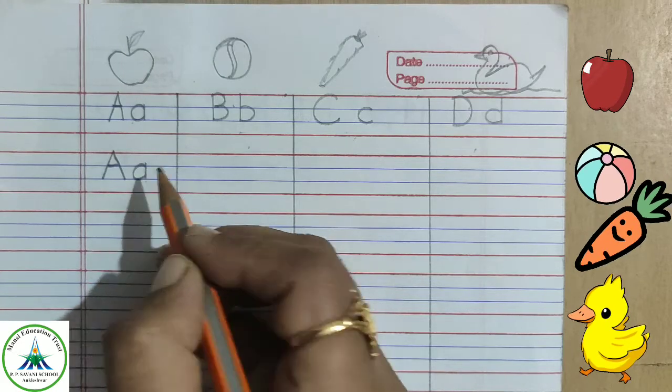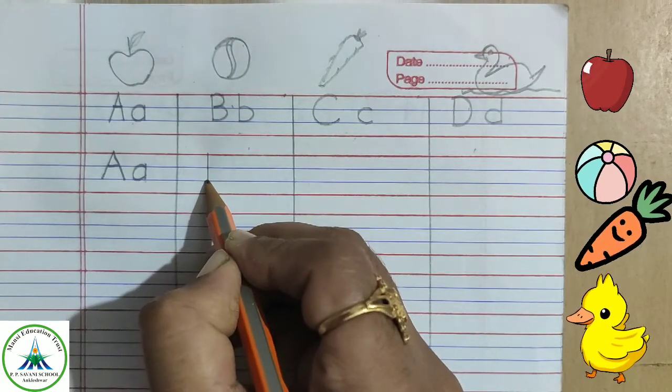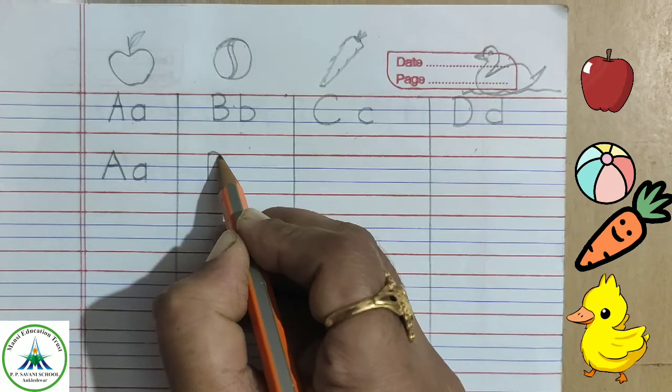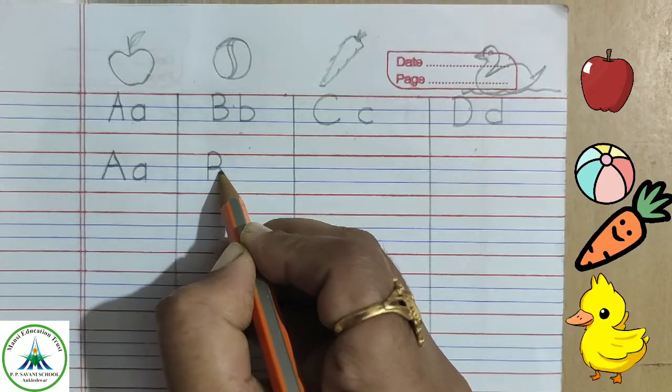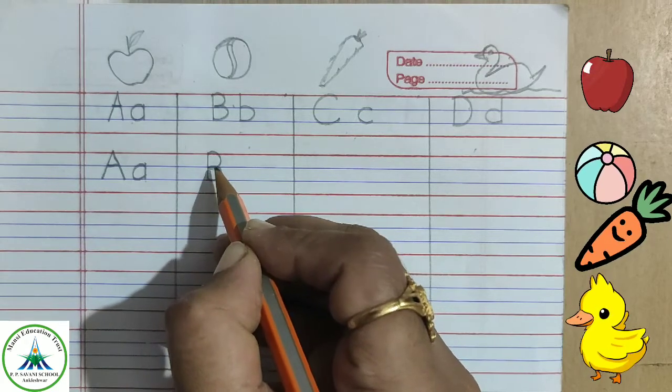To write capital letter B, make a standing line in three lines, then half circle and again half circle. These both half circles should be same.